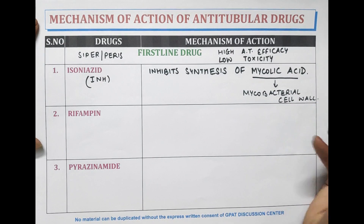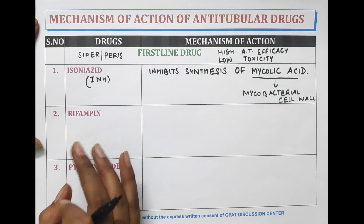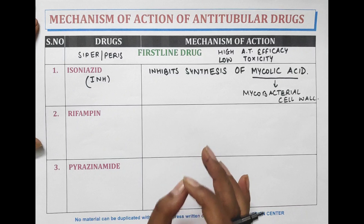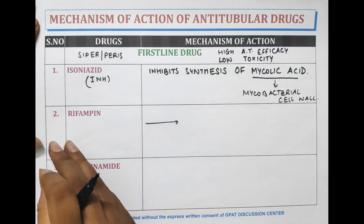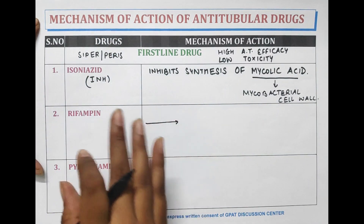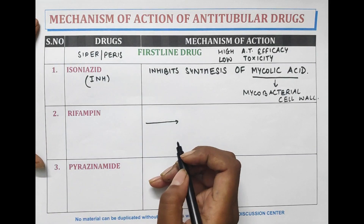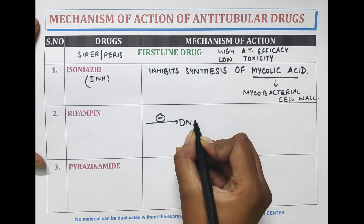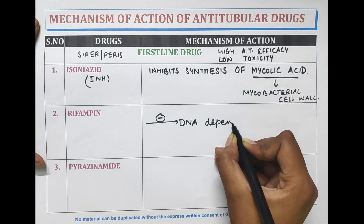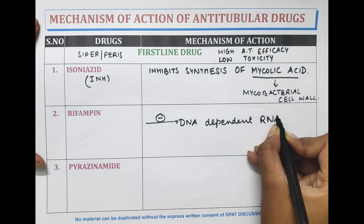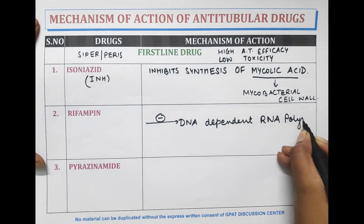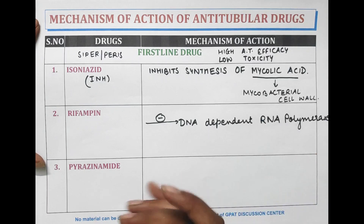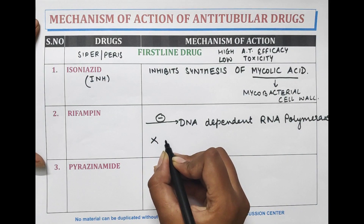The next drug is rifampicin. Rifampicin inhibits the enzyme DNA-dependent RNA polymerase. I am just indicating the mode of action by these arrows. Rifampicin inhibits DNA-dependent RNA polymerase and blocks its polymerization function.